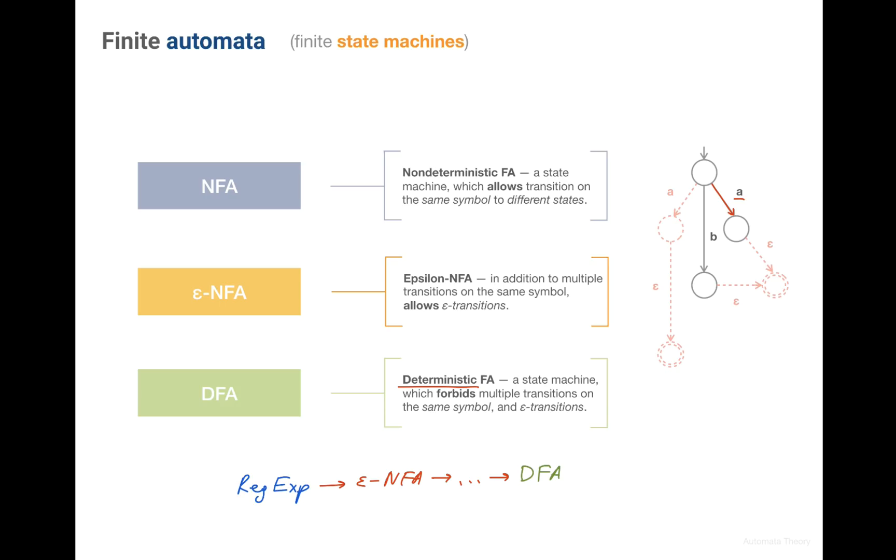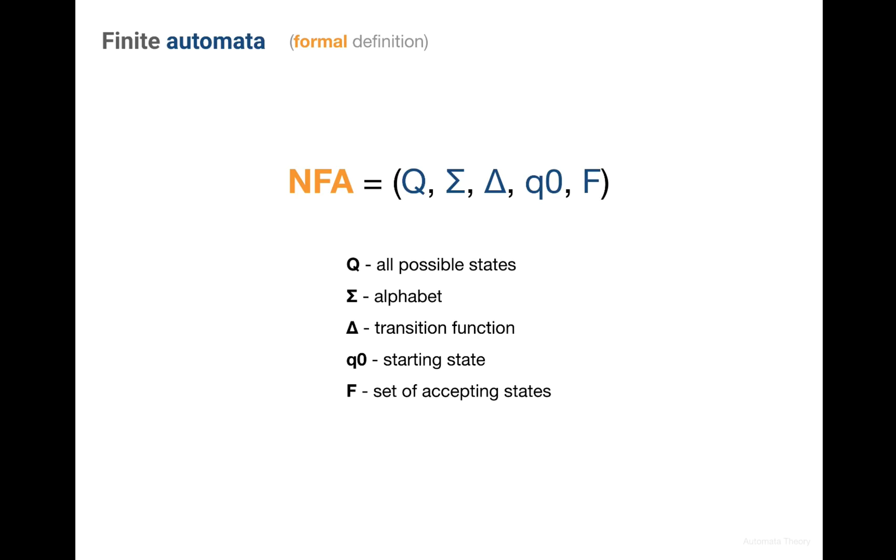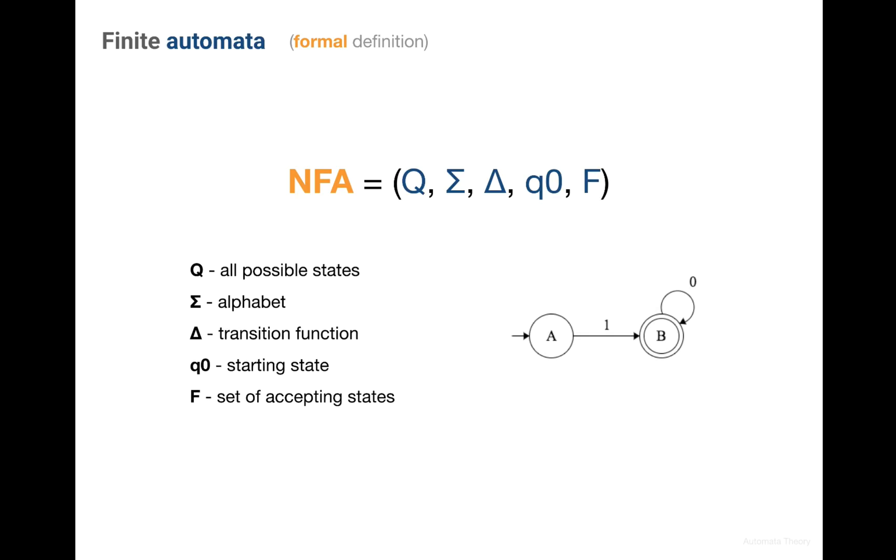Now when we know which specific state machines we'll be using for implementing regular expressions, let's finally give a formal definition of a finite automata or a state machine. A state machine, and I used NFA here, is a tuple of five elements: Q, Σ, Δ, q0, and F.